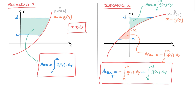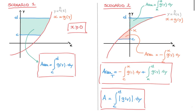Do make a note of this. If you're comfortable with the absolute value of a function, we could summarize all of this with one single formula that will always work, whether dealing with Scenario 1 or Scenario 2: the area equals the definite integral from c to d of the absolute value of g of y. If you find the absolute value confusing, simply remember that any area on the left-hand side of the y-axis needs to be subtracted, to make sure the areas don't cancel each other out.